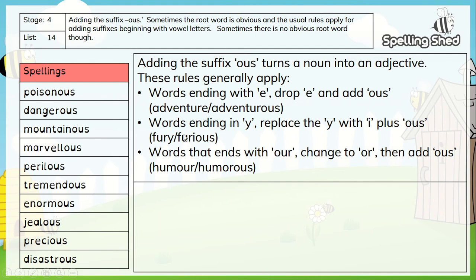Just a reminder of the rules. If the root word ended in E, you drop the E and add O-U-S. For example, adventure — drop the E, add O-U-S. Root words that ended in Y, you replace the Y with an I and then add O-U-S. So you've got fury — drop the Y, it becomes furious.